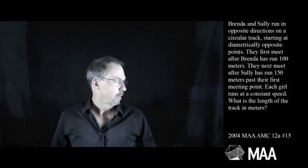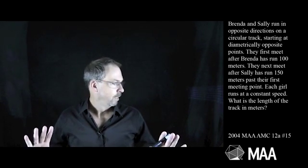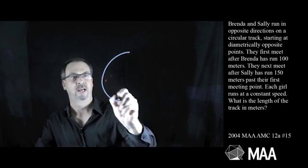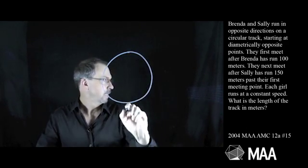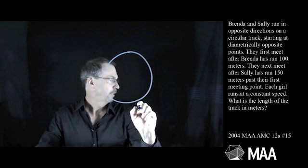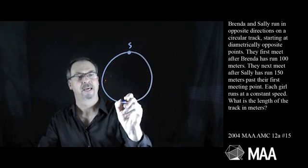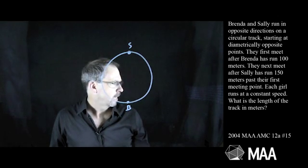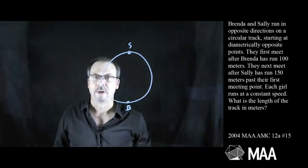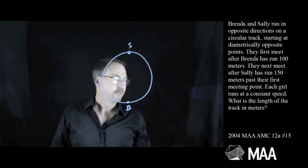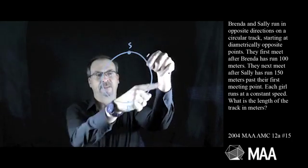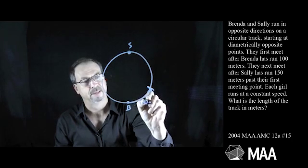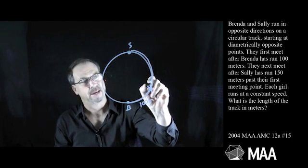Okay, alright, I'm pausing there. That was a lot to take in. I need to go through it again. Brenda and Sally run in opposite directions on a circular track — I can draw a circular track. Starting at diametrically opposite points. So maybe Sally starts there, Brenda starts there. They first meet after Brenda has run 100 metres. So they go in opposite directions — Sally goes this way, Brenda goes this way — and they meet at some point when Brenda has gone 100 metres. And Sally's gone whatever that is.